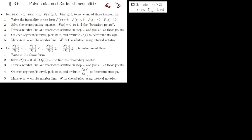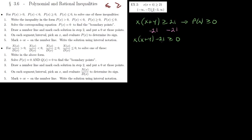We need to get the inequality into that form — we need 0 on the right side. Starting with x(x + 4) ≥ 21, we subtract 21 from both sides to get x(x + 4) − 21 ≥ 0. Multiplying out, we get x² + 4x − 21 ≥ 0.